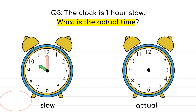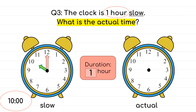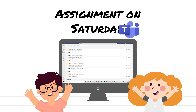Last example — the clock is one hour slow. What is the actual time? As you can see, the clock shows 10 o'clock, but it's slow by one hour. To find the actual time, when you see the words 'one hour slow' it means we need to add one hour. So from 10, we jump one hour and get 11. The actual time is 11 o'clock. That's all from teacher today — you can have your assignment on Saturday. Goodbye!